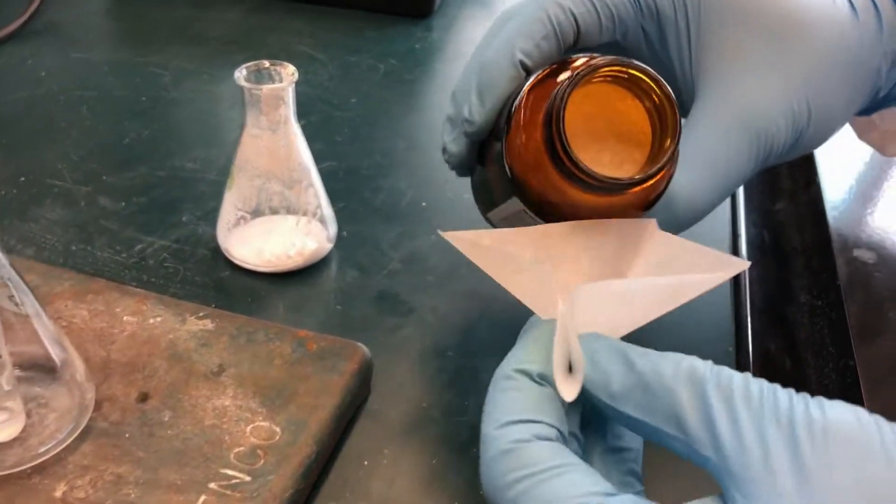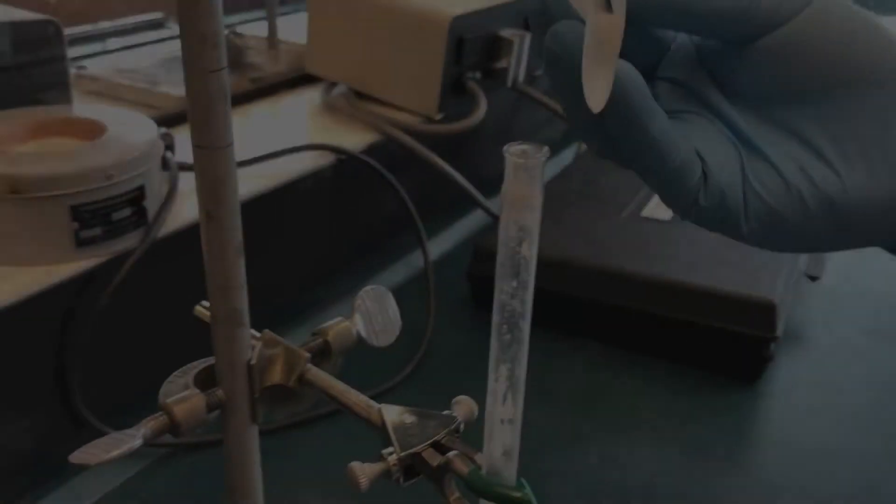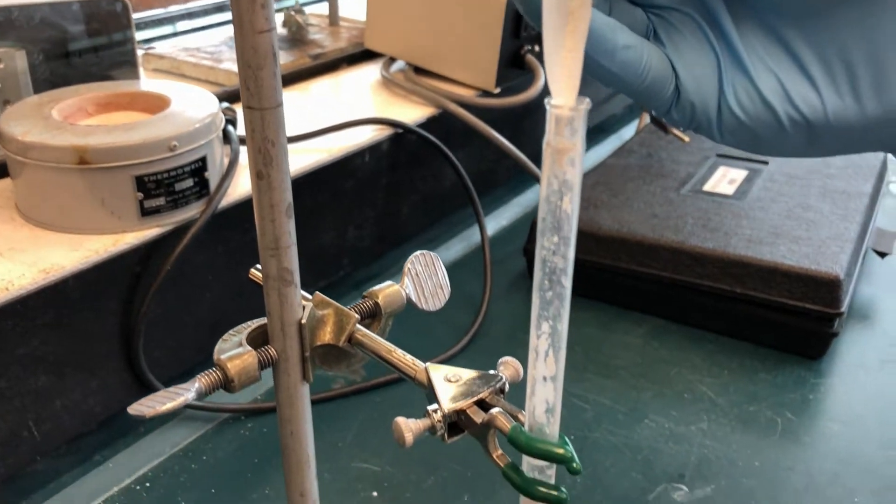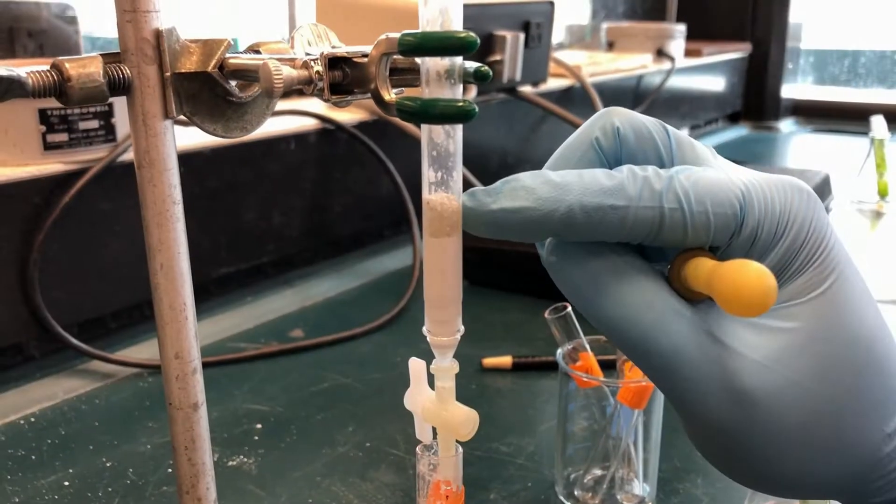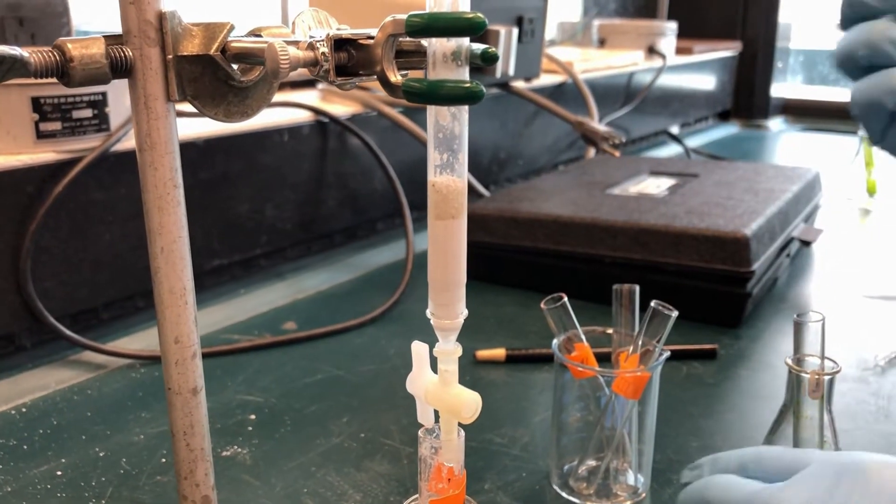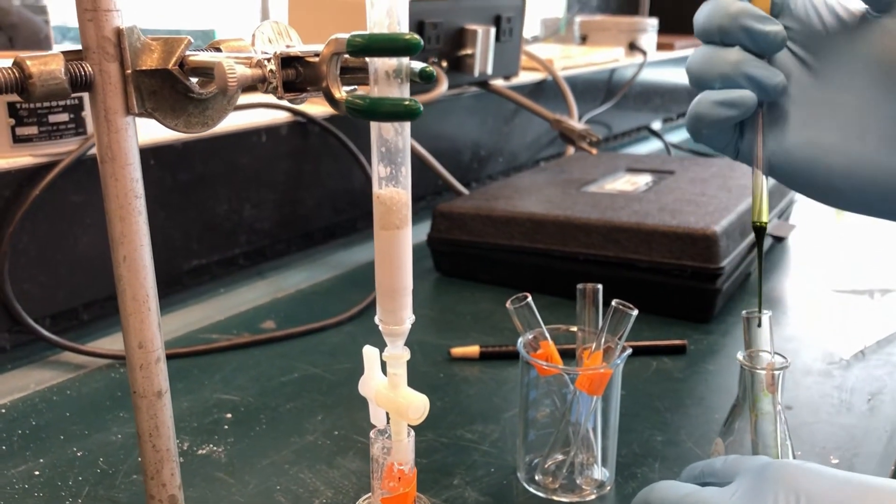Add a quarter inch of sand to the column as in part 2, making sure the sand is level. Once the remaining petroleum ether is nearly absorbed into the sand, add half of the green pigment to the column.